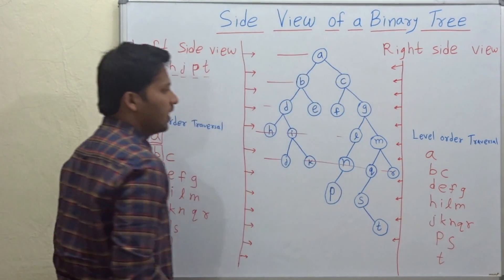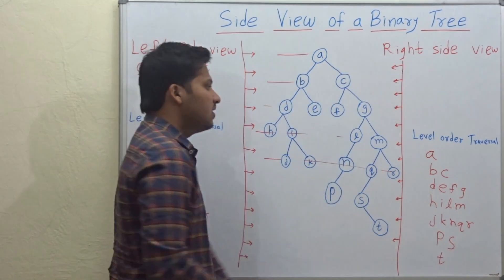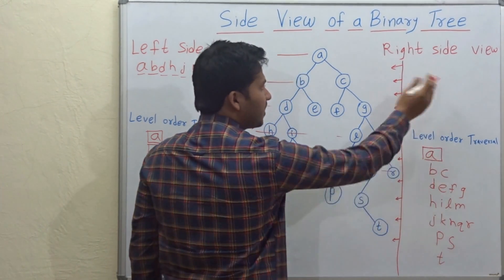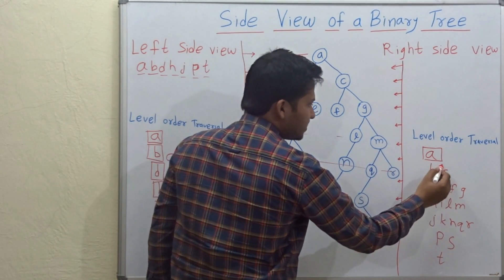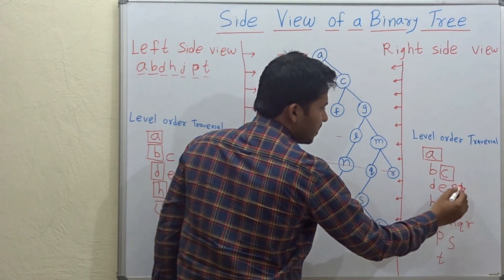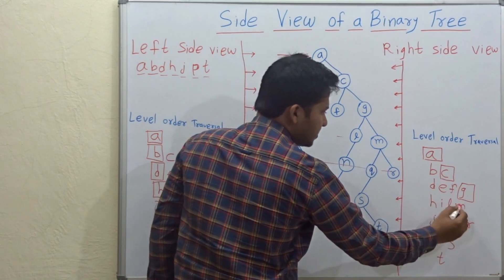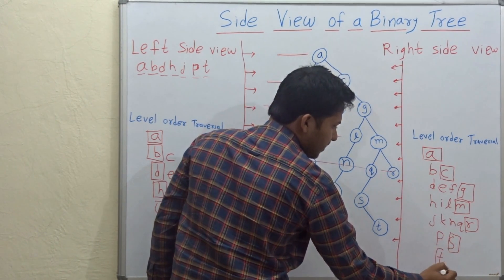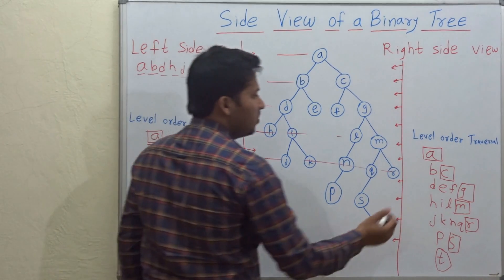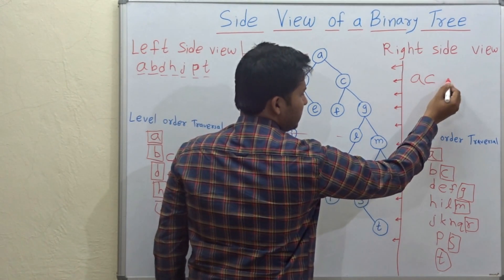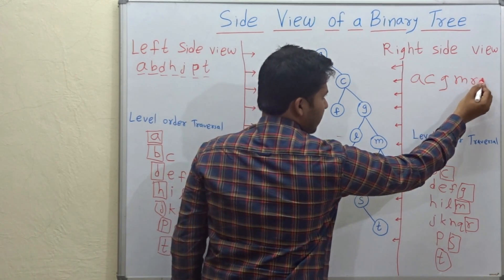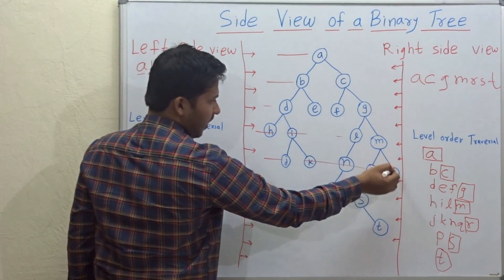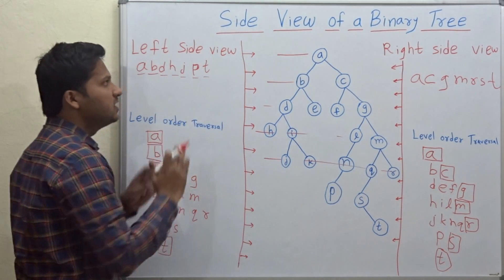For the right side view, the last nodes of each level are represented as the right side view. So A is the last node of the first level, then C is the last node of the second level, G for the third level, then M, R, S, and T. So the right side view is A, C, G, M, R, S, T. We can see in this tree that A, C, G, M, R, S, T is the right side view.